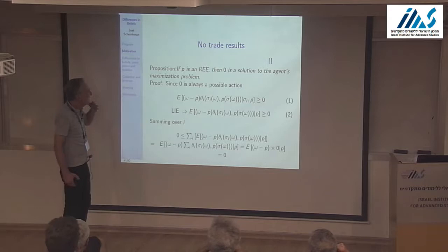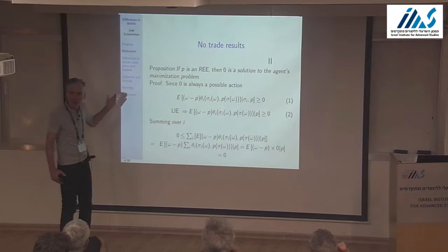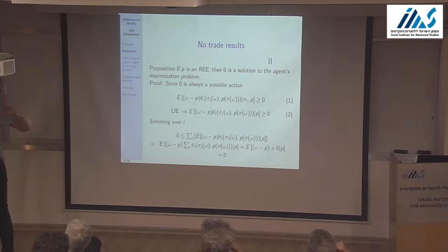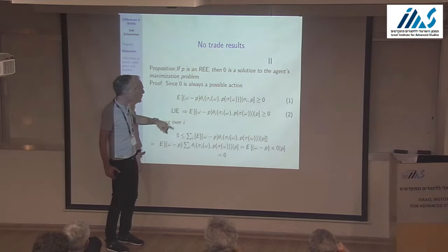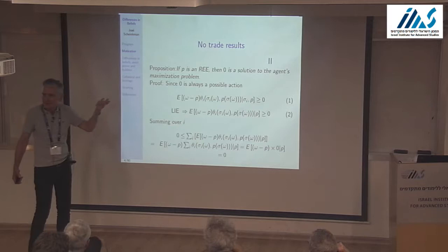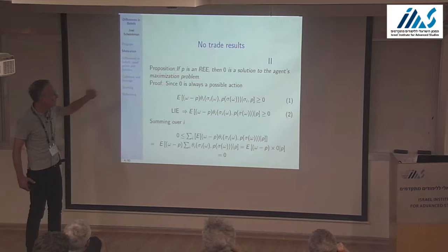Here's the proposition: if P is a rational expectations equilibrium, then zero is a solution to all agents' maximization problems. In any equilibrium, agents might as well go home and sleep — they're just indifferent. They may choose something else, but they're indifferent. Zero is always a possible action, so the expected return of any agent has to be greater than or equal to zero; otherwise you just do zero.